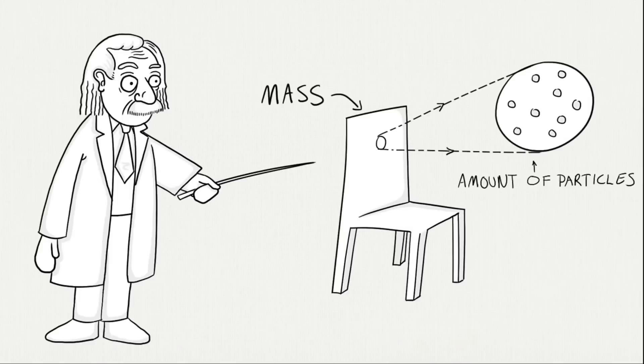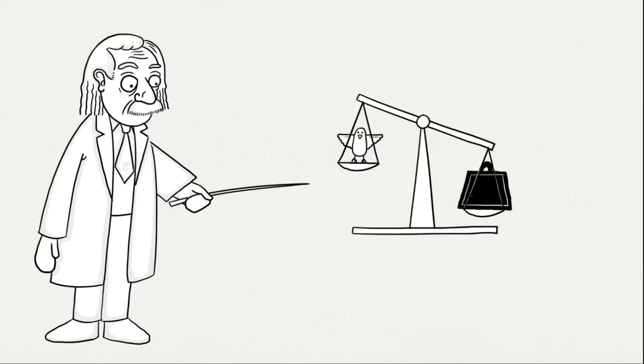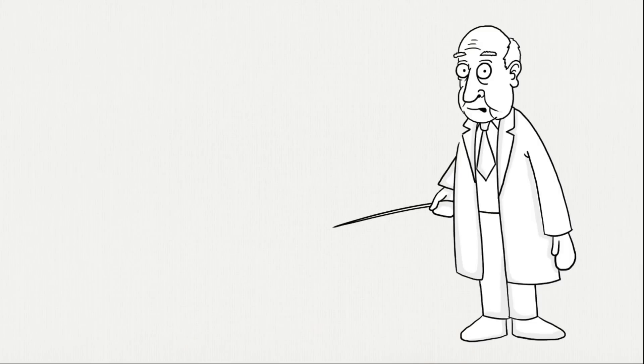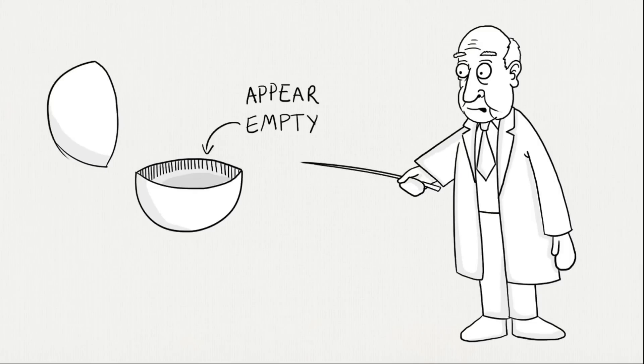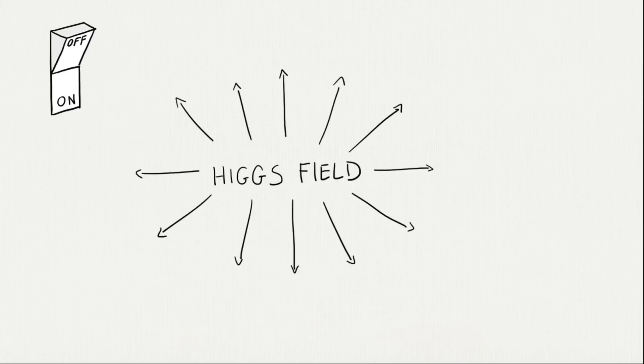Mass represents the amount of particles in an object. The more mass, the heavier it is. But in the 60s, Peter Higgs noticed that particles don't have volume. They appear empty. So how can they have mass? He said mass is not stuff, but something like a charge. The charge is given to the particles by an invisible field that is all around us. The Higgs field.